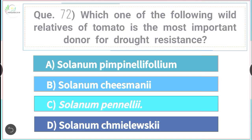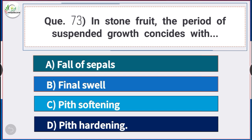Question number 73: In stone fruit, the period of suspended growth coincides with — answer option D — pit hardening. In stone fruit, the period of suspended growth coincides with pit hardening.